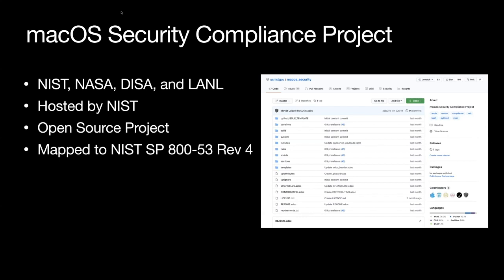The Mac OS Security Compliance Project was created to hopefully solve this problem. It's a joint effort between NIST, NASA, DISA, Los Alamos Labs, and a whole handful of people. It's hosted on the US NIST Gov GitHub account. We've mapped around 150 settings within the operating system to NIST 800-53 Revision 4 controls. Because it's on GitHub, it's an open source project to create and generate security baselines quicker and in a more agile way. Since every organization has had to do this, we figured why not do it out in the open collaboratively — anyone can contribute and submit pull requests or issues.